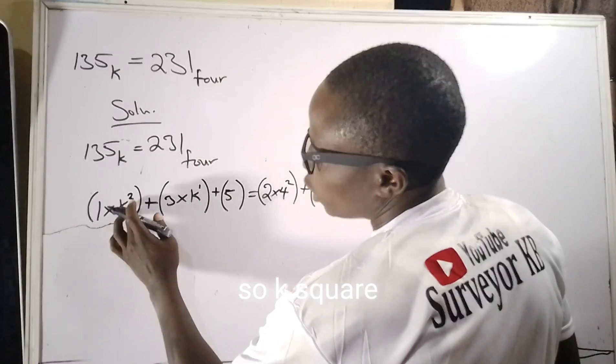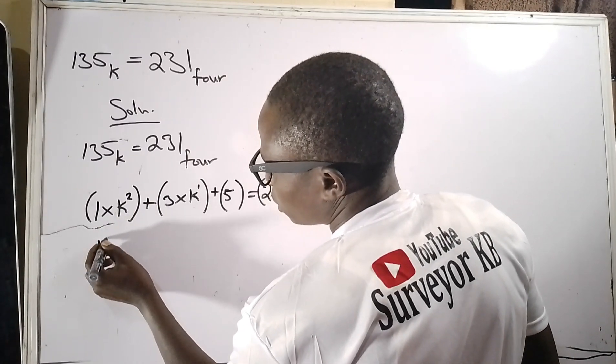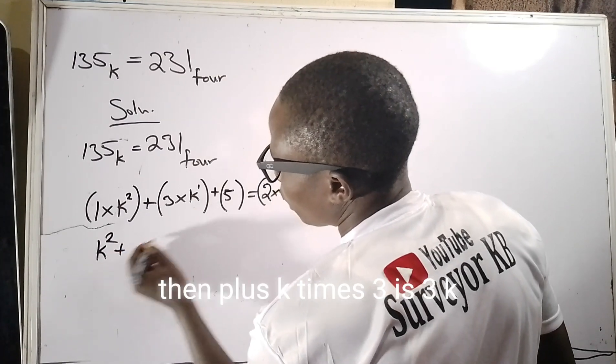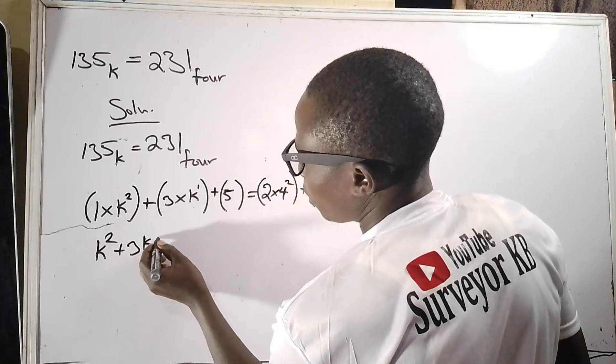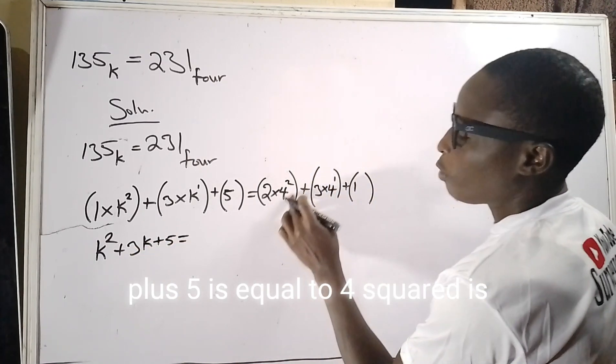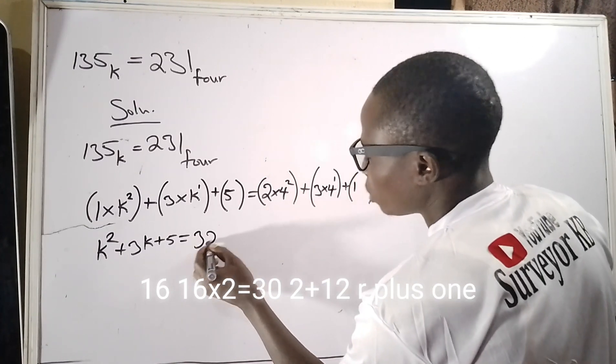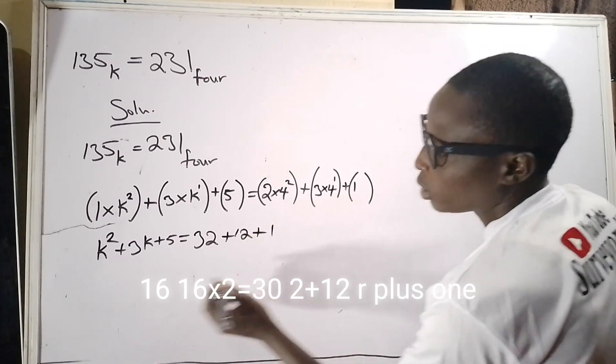So close the bracket. k squared times one is k squared, then plus k times three is 3k plus five equals...